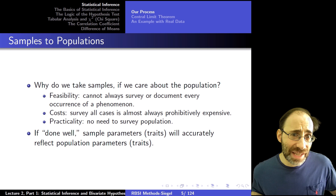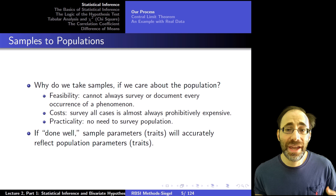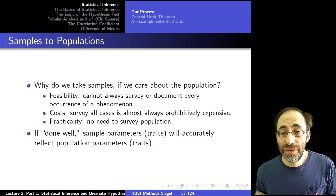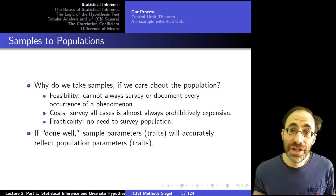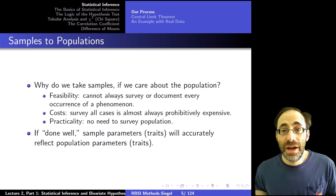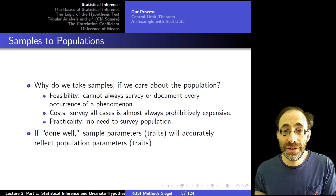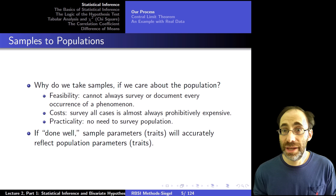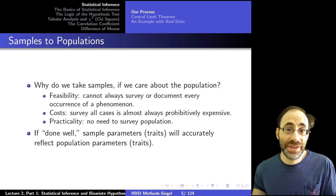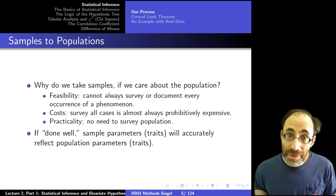We take samples in the first place, even though we care about populations, for several reasons. First, we can't feasibly get data on every single element of the population. Second, cost — it's prohibitively expensive to survey all possible cases, so we choose a sample. Third, practicality — we can use inference to infer details of the population from the sample. For these reasons, we take data on a sample and infer things about the population from it.